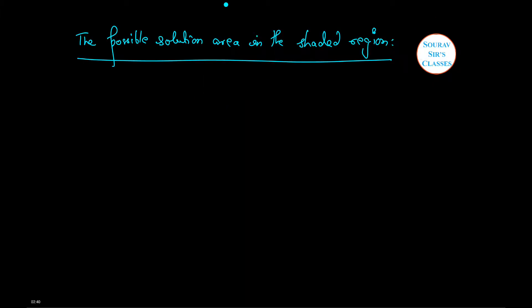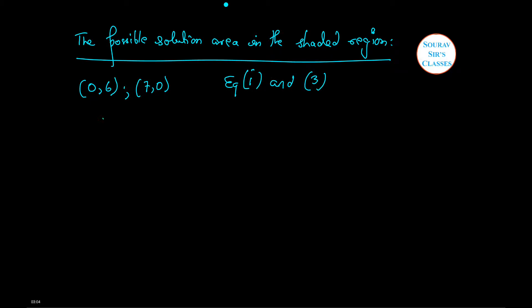Now let us solve the shaded region. In order to find the possible solution area in the shaded region we will consider the limits 0, 6, 7, 0 and all the points that lie within the boundaries of the shaded region. Now let us solve by taking equation 1 and equation 3, that is Q1 plus 3Q2 equals 18 and 2Q1 plus Q2 equals 14.